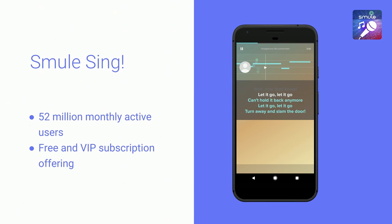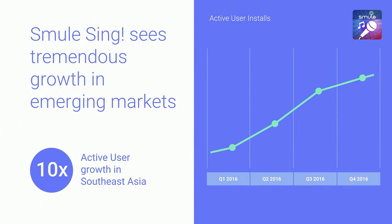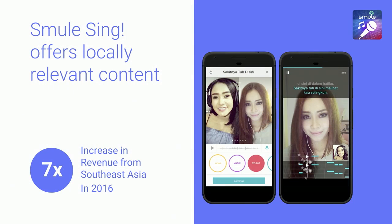Smule is a leading developer of mobile music apps, including Smule Sing, that allows users to sing along to their favorite songs in a karaoke-style fashion. You can overlay audio effects to make your voice sound like a pop star. Smule saw over 10x active user install growth in the Southeast Asia region last year, with over 40% of their user base now coming from this region — Indonesia being one of their fastest-growing countries. They also saw over 7x revenue growth in the same period in Southeast Asia.